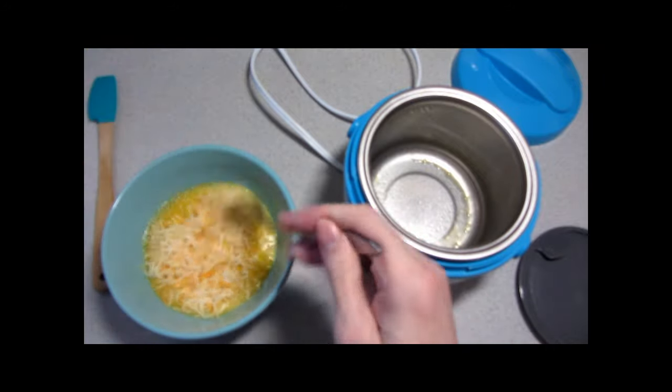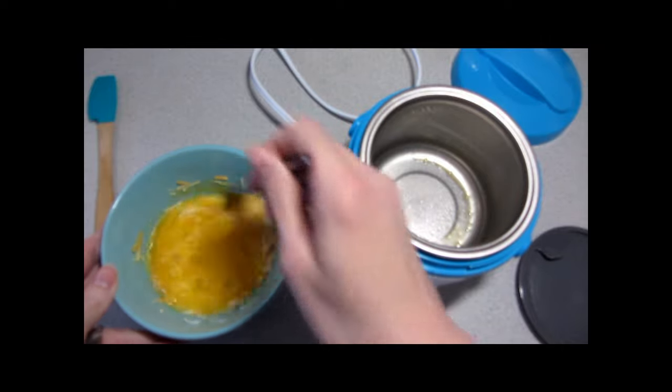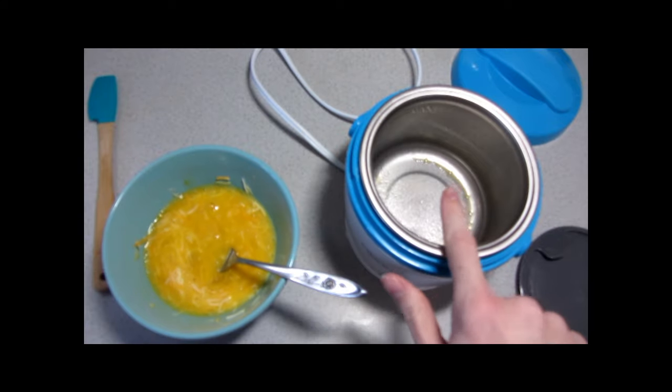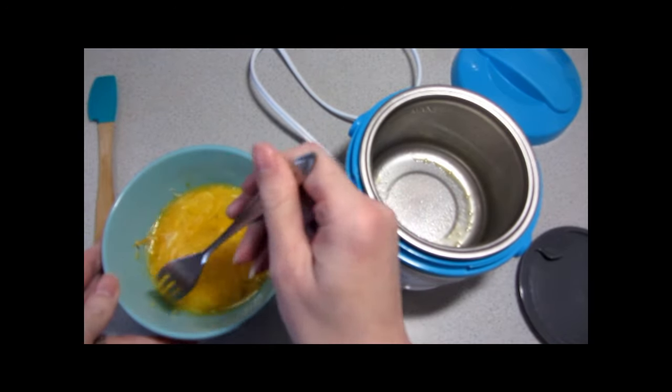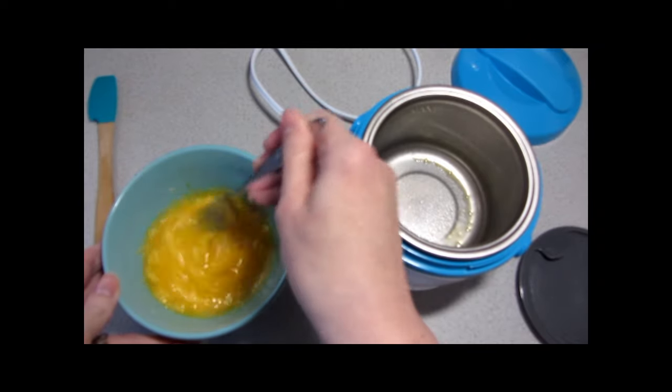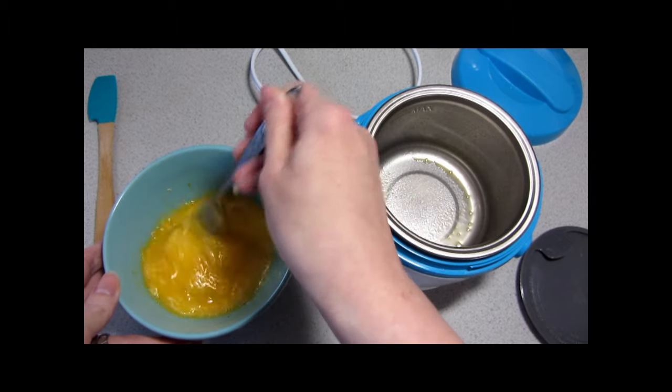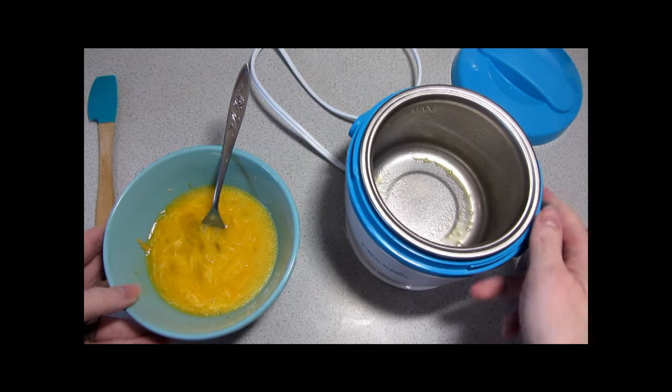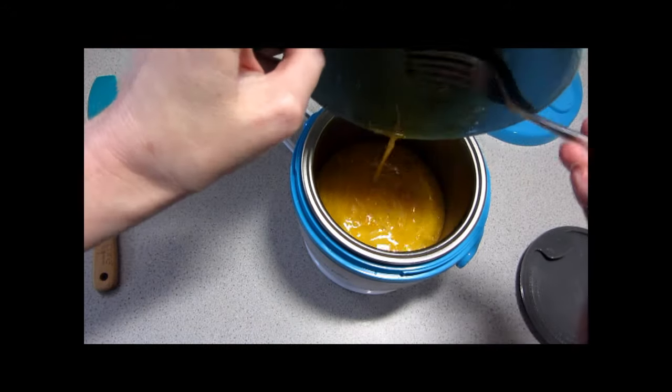Add some shredded cheese, stir that in. I have sprayed the inside of this with cooking spray. I didn't do that the first time and it was fine. The eggs actually released pretty well, but I did have to give it a good scrubbing afterwards. So we're going to see how the cooking spray helps. And I'm just going to pour this in.